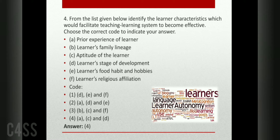From the list given, identify the learner characteristics which would facilitate the teaching-learning system to become effective. Options: prior experience of learner, learner's family lineage, aptitude of the learner, learner's stage of development, learner's food habits and hobbies, learner's religious affiliation. Answer: prior experience of learner, aptitude of the learner, and learner's stage of development. Neither food habits, religious affiliation, nor family will influence the teaching-learning system.